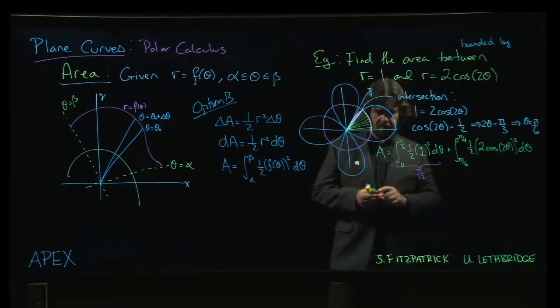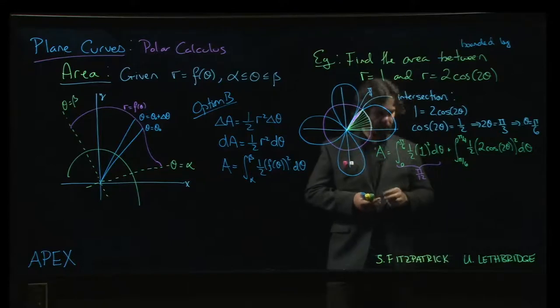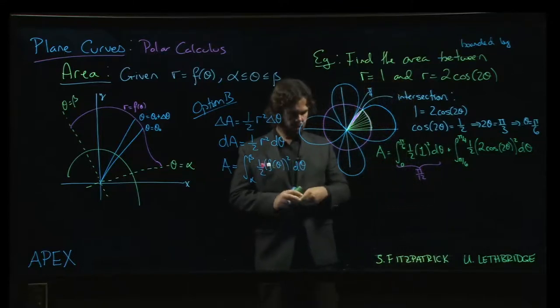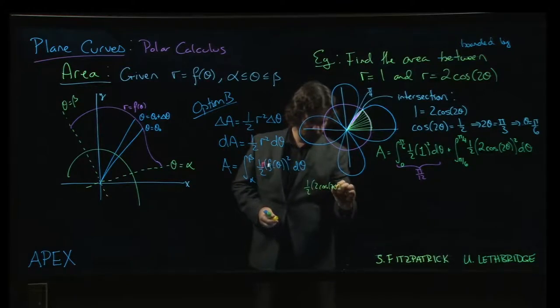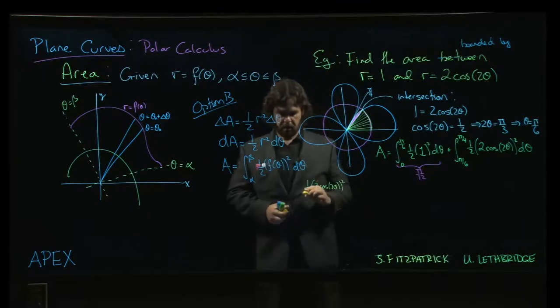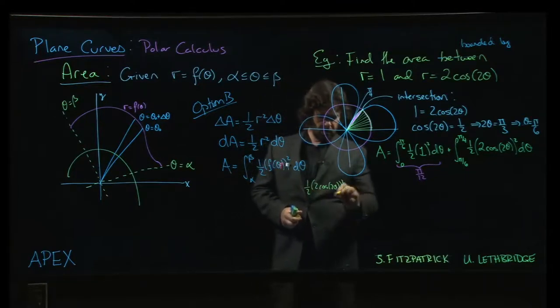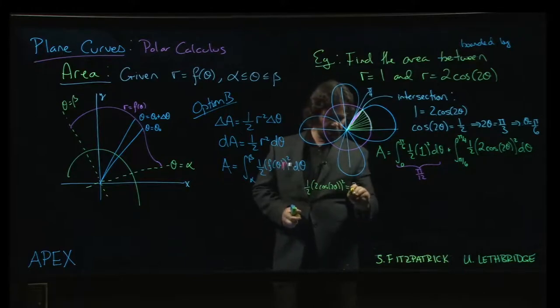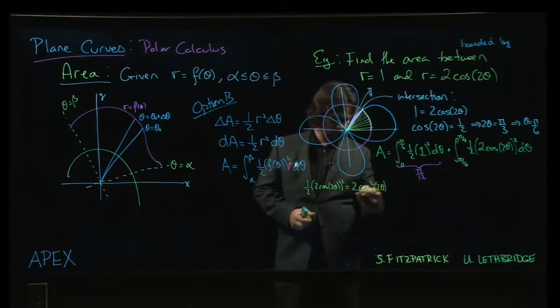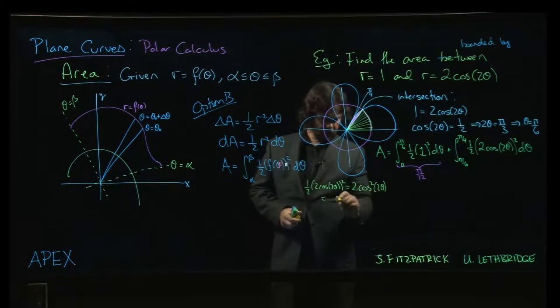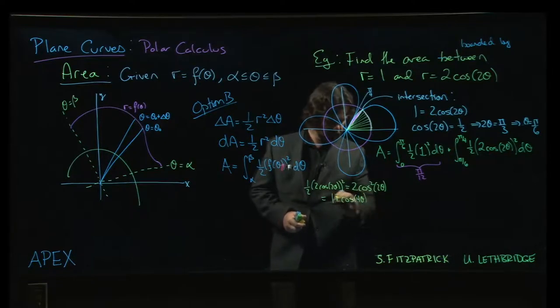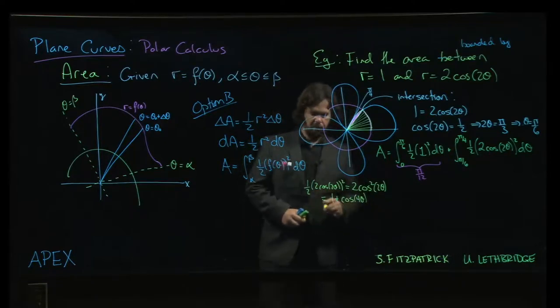The other one, we need a bit more work. Okay? So let's have a look. We have 1 half of 2 cos 2 theta all squared. Okay. So the 2 gets squared. It gives me 4. 4 times a half leaves me with a 2. So it's 2 cos squared 2 theta. And if we apply a power reduction formula, that is going to be 1 plus cos 4 theta.